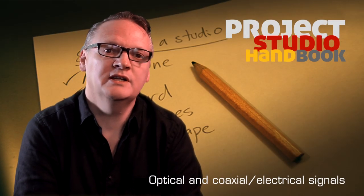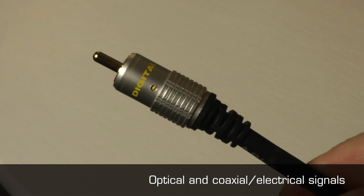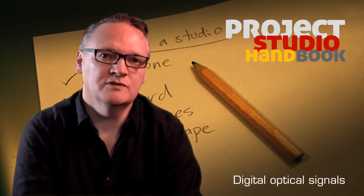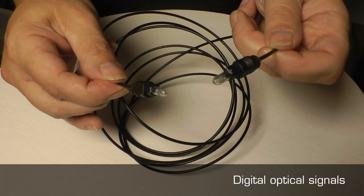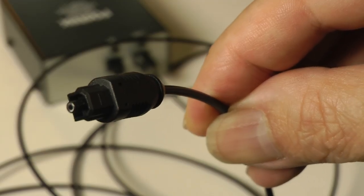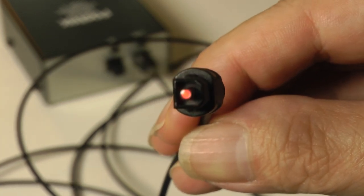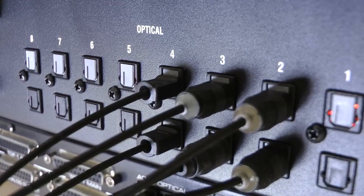Digital audio signals can be divided into two categories: optical and electrical. Optical signals are transmitted with fibre optic TOS-link leads. The signal is sent as light and is therefore inaudible until converted by a receiving device. They are commonly used to send or receive one of two optical signal formats.